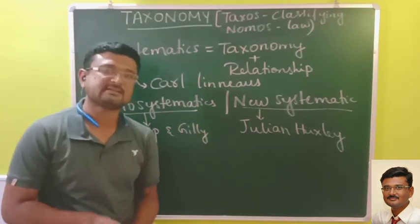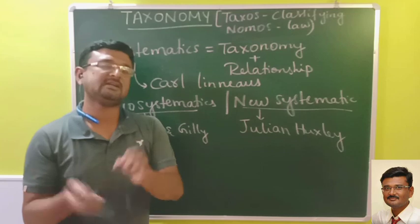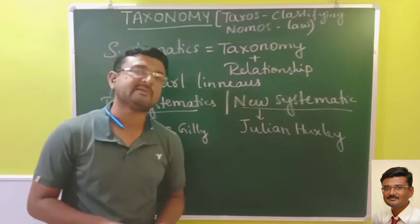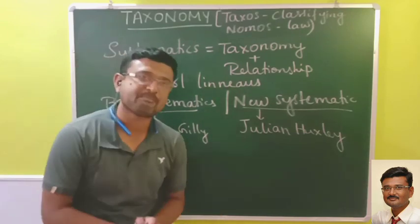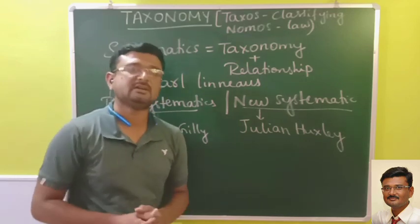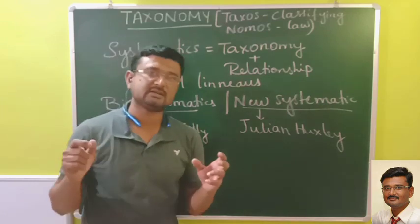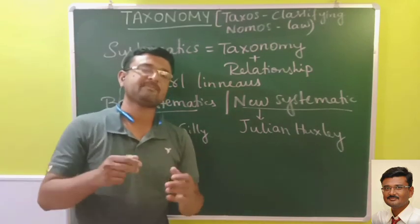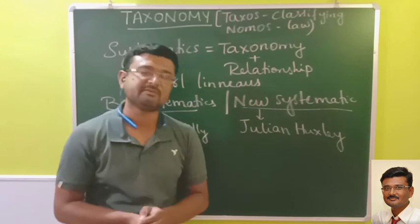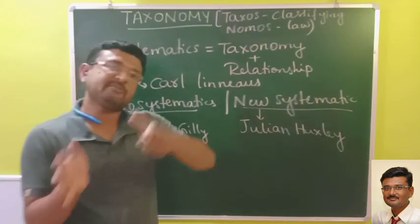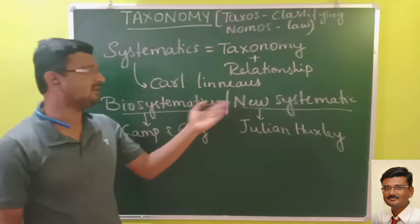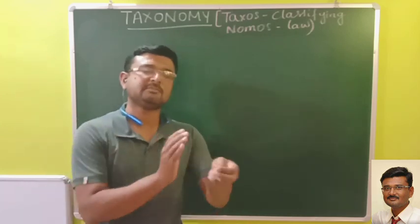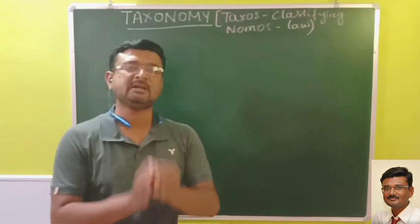New systematics equals systematics plus phylogeny. Phylogeny means how one organism is evolutionarily related to another — how the organism might have evolved. Like what Darwin says, man evolved from monkeys, so he could provide evolutionary relationships among monkeys and man. This is how plants and animals in different phyla, classes, or kingdoms are studied under new systematics in taxonomy.